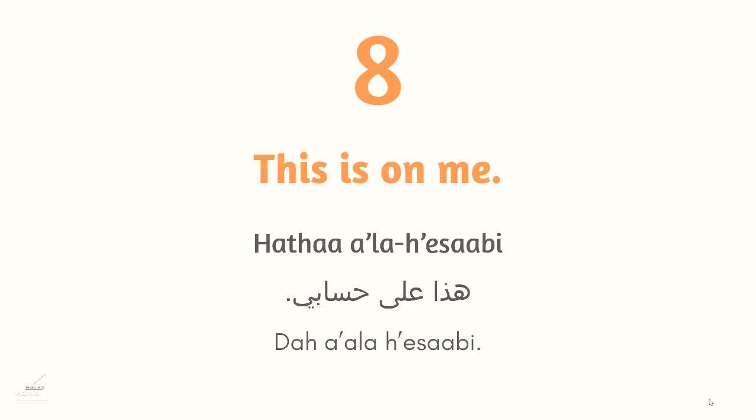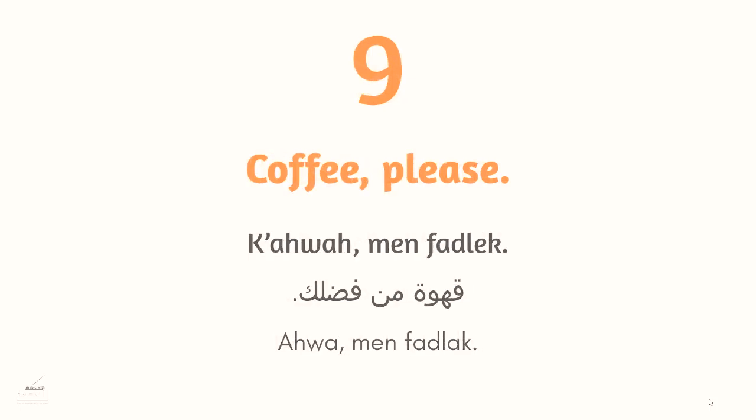Phrase nine: قهوة من فضلك — 'coffee please.' قهوة is coffee in Modern Standard Arabic. In Egyptian Arabic we don't pronounce the difficult قاف letter the same way — we say أهوة instead, so: أهوة من فضلك.